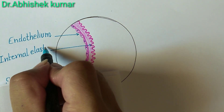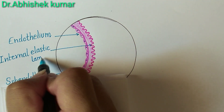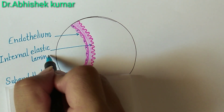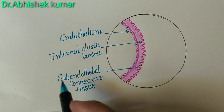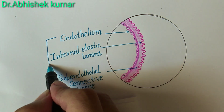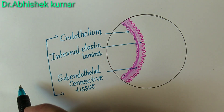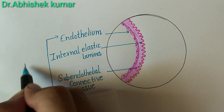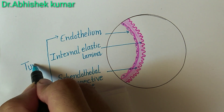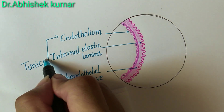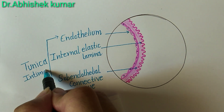The internal elastic lamina is a very bright refractile membrane, and it is very wavy in fold. Why is it wavy in fold? Because the contraction of smooth muscle cells, which are present adjacent to the internal elastic lamina, causes the wavy in fold. This endothelium and internal elastic lamina both together make the tunica intima.